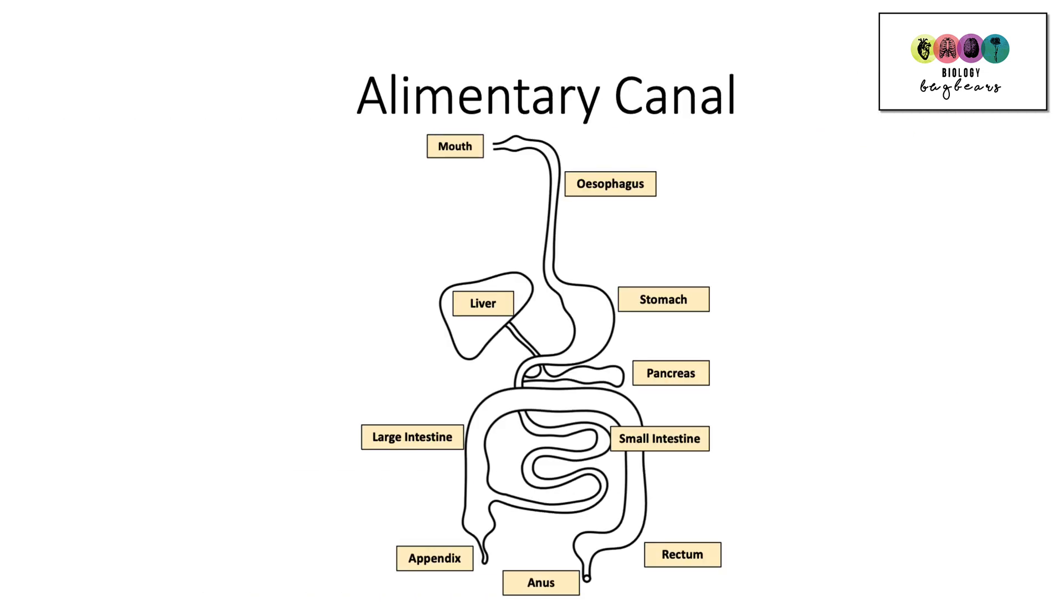An important diagram that often has featured on the exam is the alimentary canal. Sometimes you've been asked to label it and others you've been asked to draw it. So I would take time, particularly go back to 2015 and look at that paper where you're asked to draw the alimentary canal. This will give you an idea of how simple a diagram can be. One of the things that you must put in on this diagram is the arrows. That's very important. And as you draw this, then write the story of digestion.